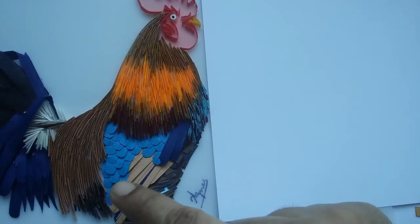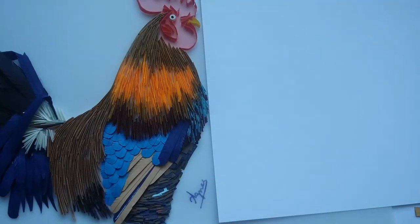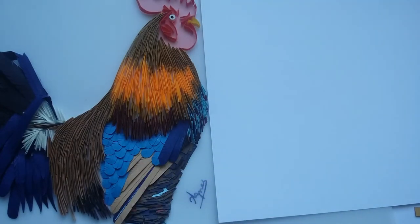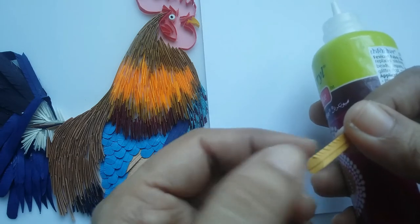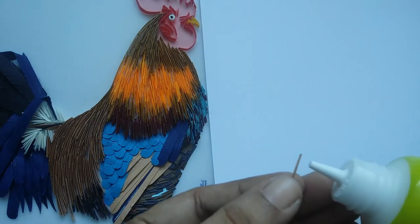While attaching to the project, glue the lower feathers first and then one above the other. Bend the end with hand and apply glue only to the top part. Repeat to form layers.